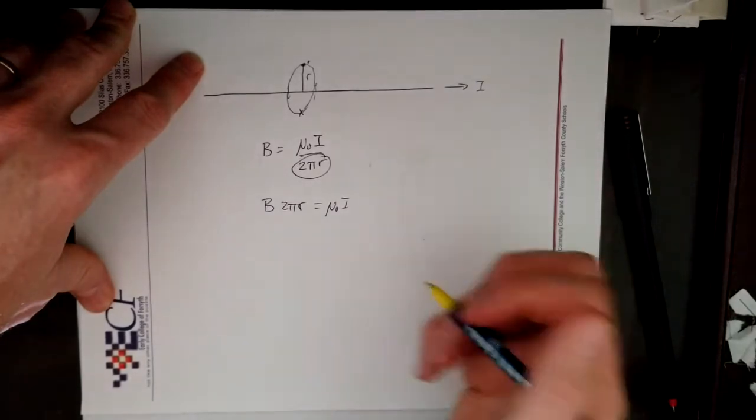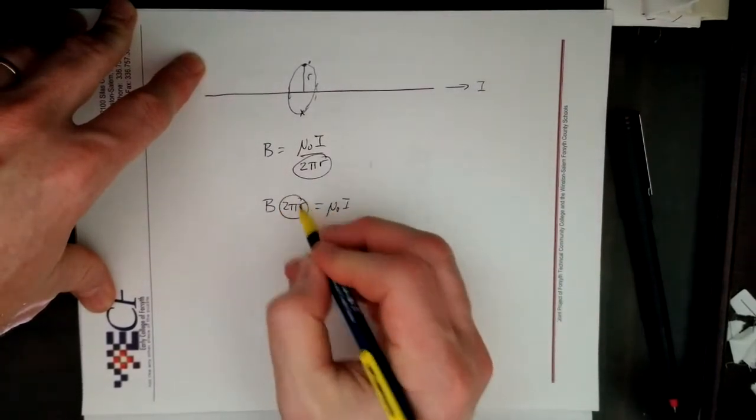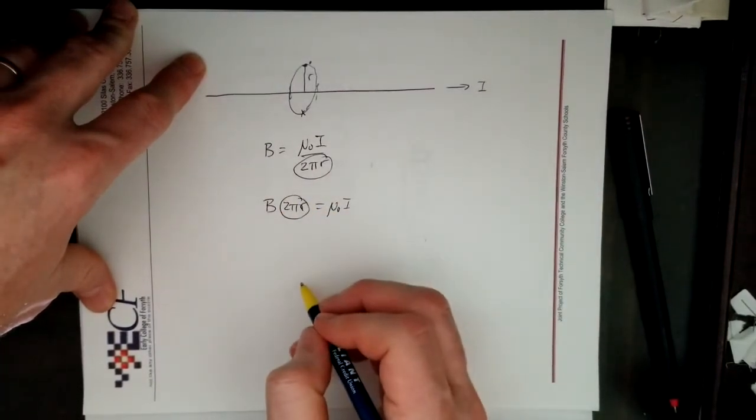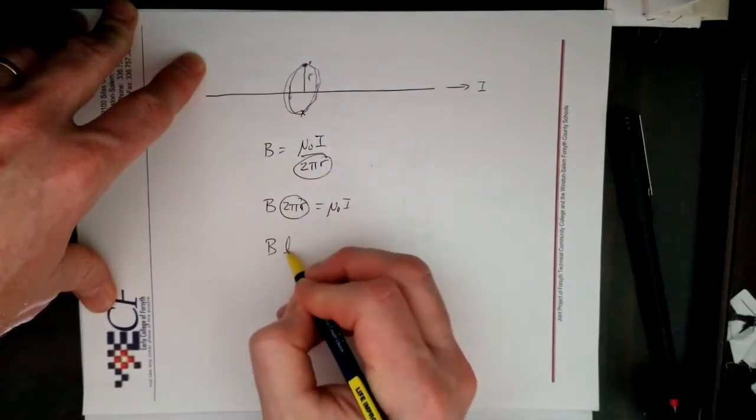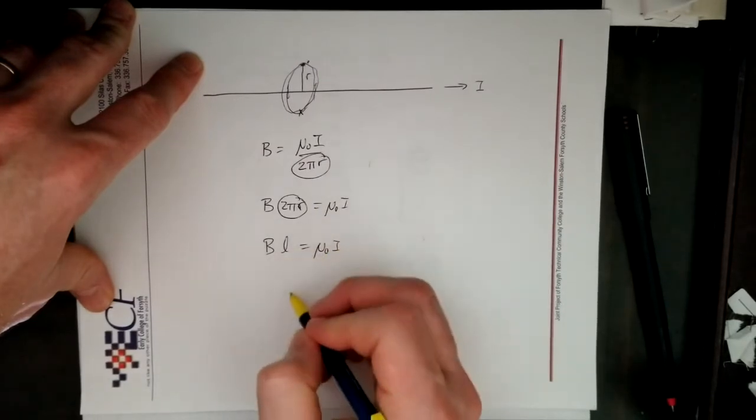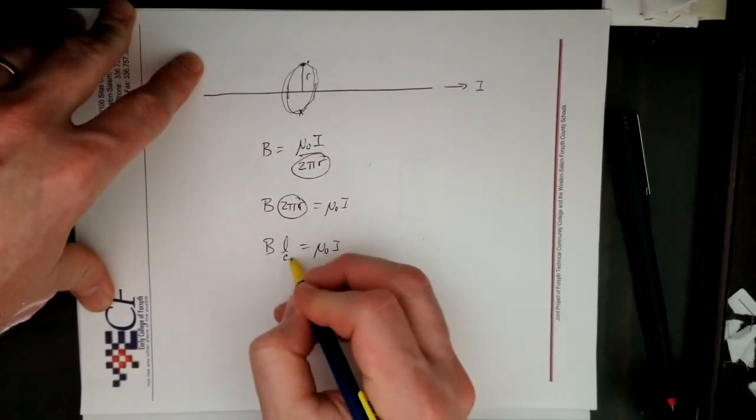And then I'm just going to generalize it. That is the circumference, so that is just the length all along that right there. So this is b l is equal to mu naught i. That's for a closed loop.